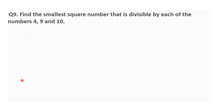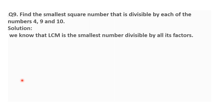Question number 9: find the smallest square number that is divisible by each of the numbers 4, 9, and 10. We have to find the smallest square number which is divisible by all these three numbers. As we know, LCM is the smallest number divisible by all its factors.